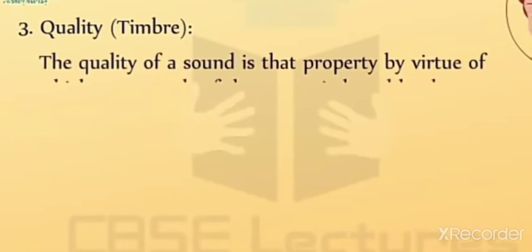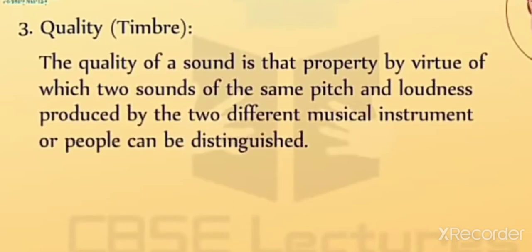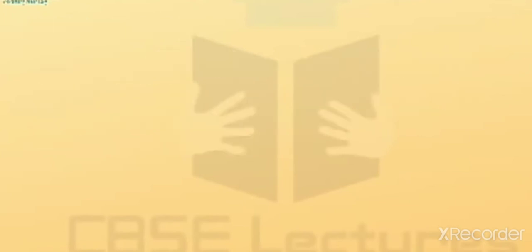3. Quality or Timbre: The quality of a sound is that property by virtue of which two sounds of the same pitch and loudness produced by two different musical instruments or people can be distinguished. Depending on this property, we can distinguish sounds.